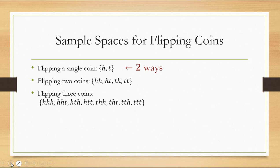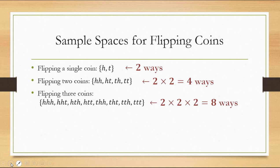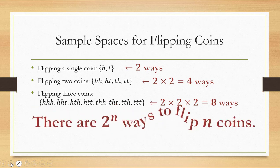Notice that when we found the sample space for a single coin, there were two outcomes. For two coins, there were four outcomes. For three coins, there were two times two times two equals eight outcomes. Each time we doubled the number of outcomes from the previous number of coins. That pattern continues — if there were four coins, we'd have two times two times two times two equals 16 outcomes. In general, there are 2 to the n power ways to flip n coins. So for flipping a hundred coins, you could raise 2 to the hundredth power.